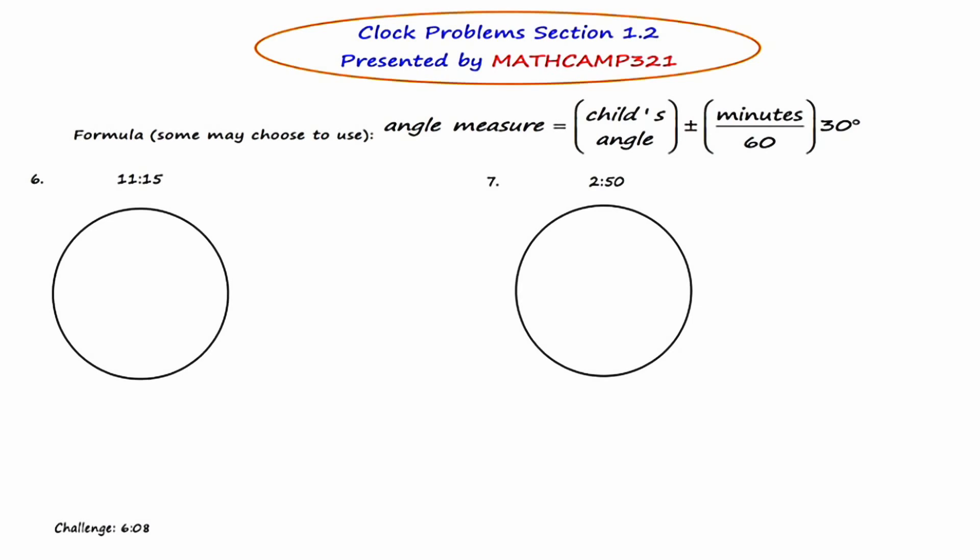Okay guys, here is the last slide with two more examples. We start with number six, which asks us to find the angle formed by the hands of a clock at 11:15. I'm going to start by putting the features of the clock on the clock.